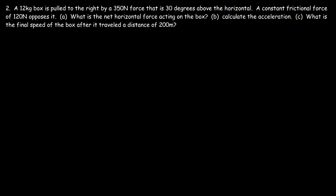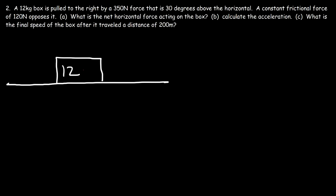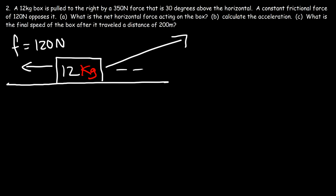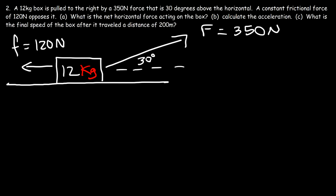Now let's work on another problem. A 12 kilogram box is pulled to the right by a 350 newton force that is 30 degrees above the horizontal, and a constant frictional force of 120 newtons opposes it. So let's draw a picture — similar to the last one but slightly different. Here's the frictional force of 120 newtons opposing it, and another force of 350 newtons at 30 degrees above the horizontal. What is the net horizontal force acting on the box?